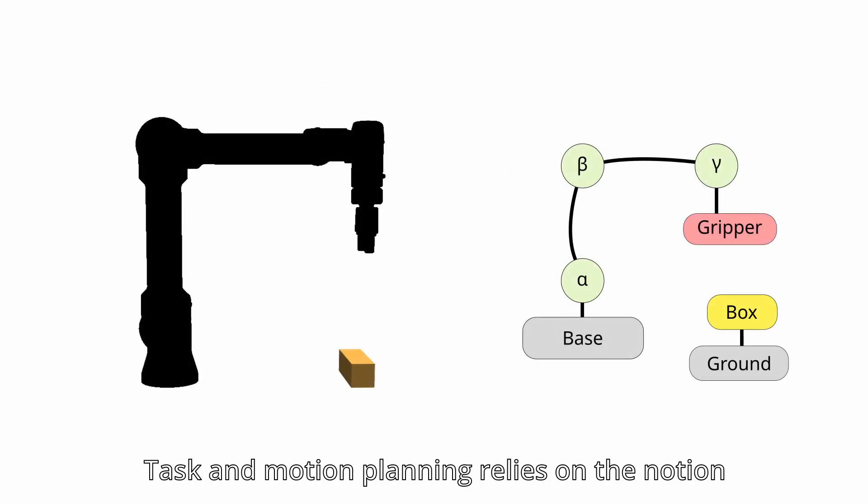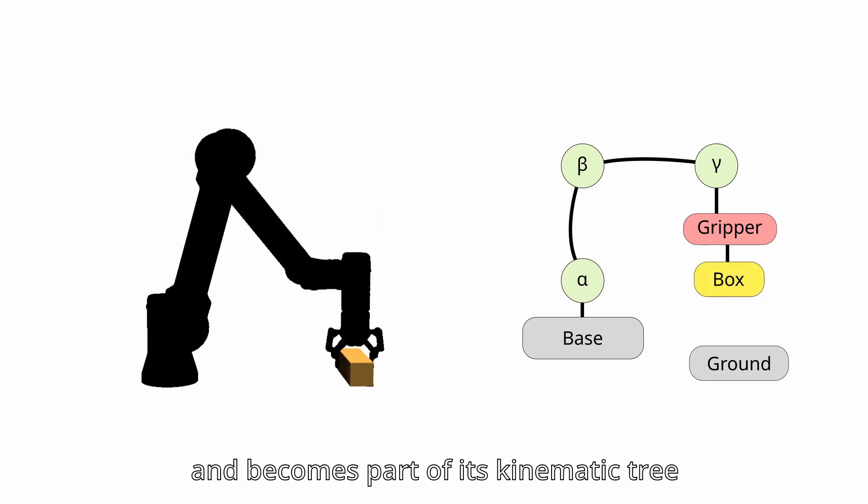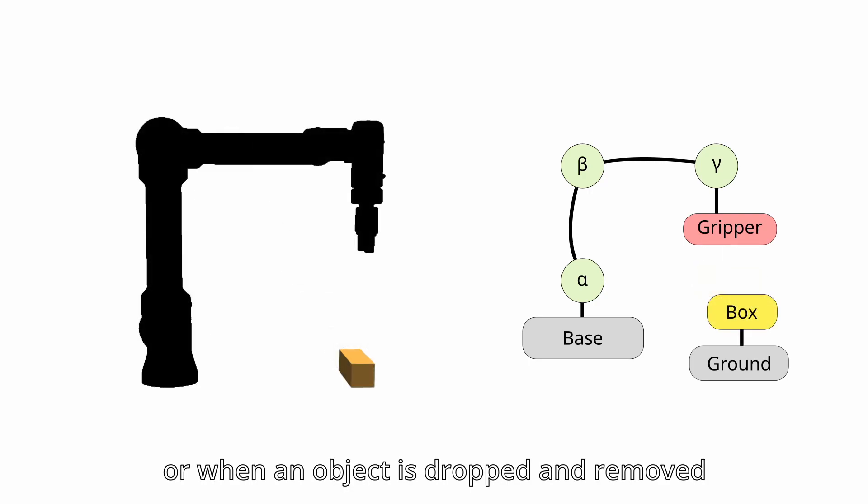Task and motion planning relies on the notion of kinematic switches. A kinematic switch happens when an object is picked up by a robot and becomes part of its kinematic tree, or when the object is dropped and removed from the tree.